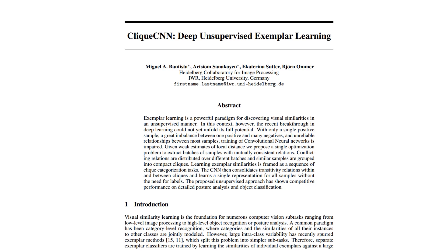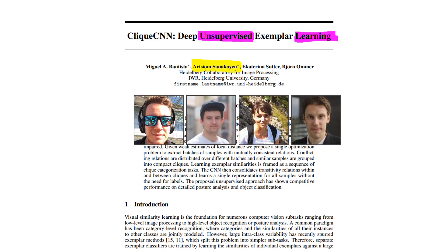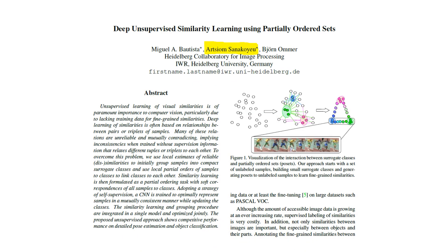Hi everyone! Welcome back! It's Artyom, and today we will talk about self-supervised representation learning — how to learn useful representations from just a bunch of unlabeled images. I will give a high-level overview of self-supervised learning and explain the paper ClickCNN, which I co-authored with colleagues at Halleberg University. I will also explain the follow-up work, Deep Unsupervised Similarity Learning using partially ordered sets, and briefly cover other important self-supervised learning methods.